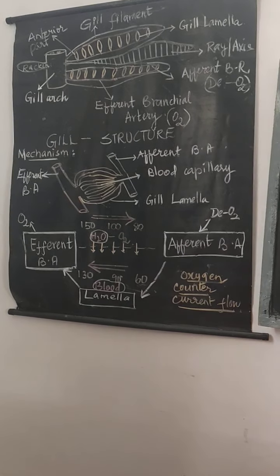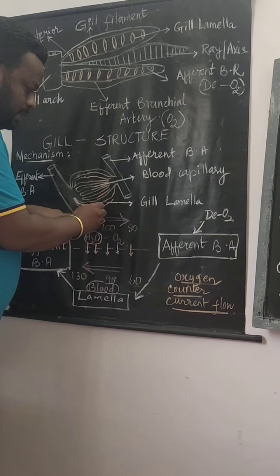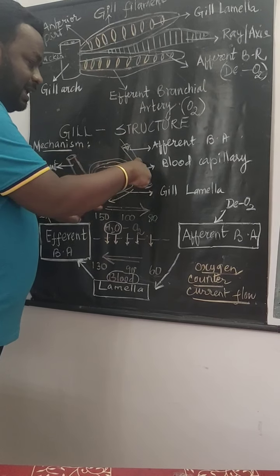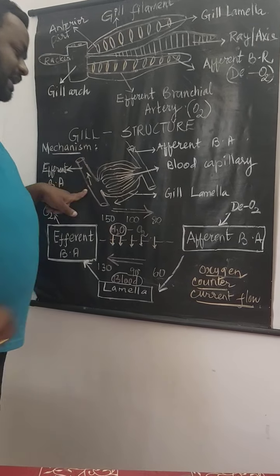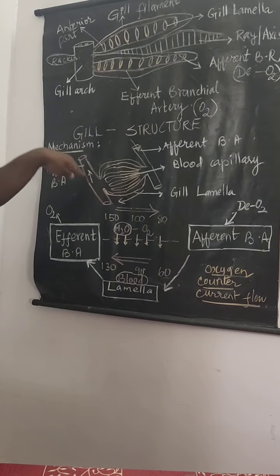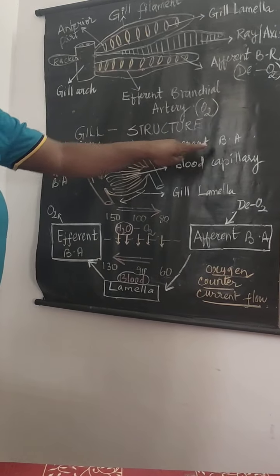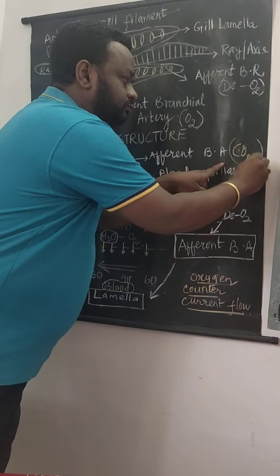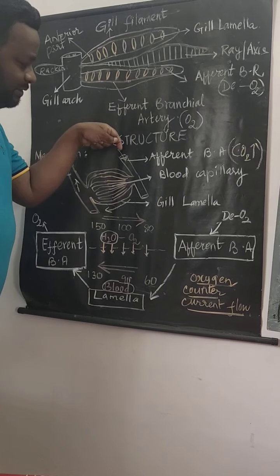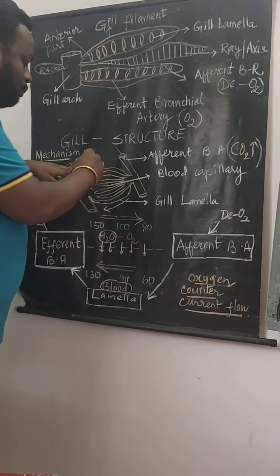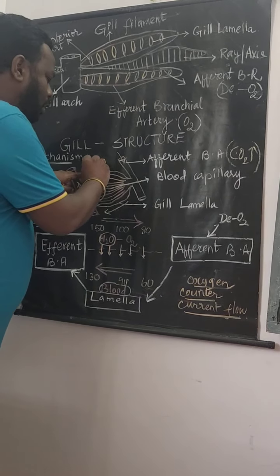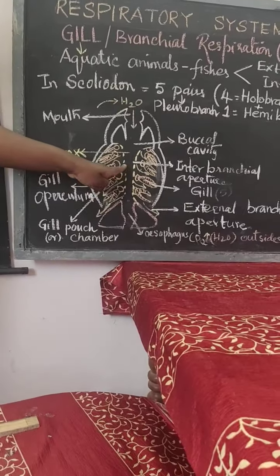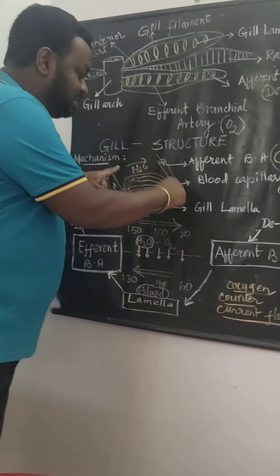The directional flow of blood is seen from the afferent to the efferent branchial artery. Deoxygenated blood moves into the afferent, then into each lamella, then reaches the efferent branchial artery. Remember, from the efferent branchial artery, carbon dioxide-rich deoxygenated blood is entering. When this blood enters into the capillaries, towards the opposite direction is the flow of water.